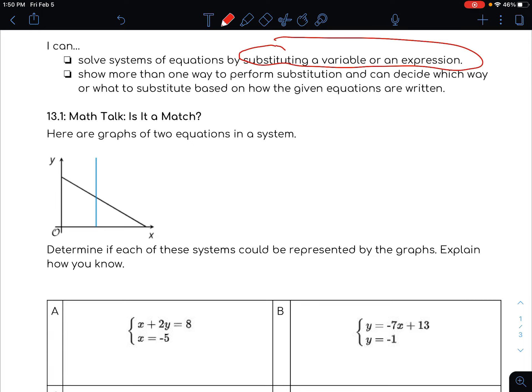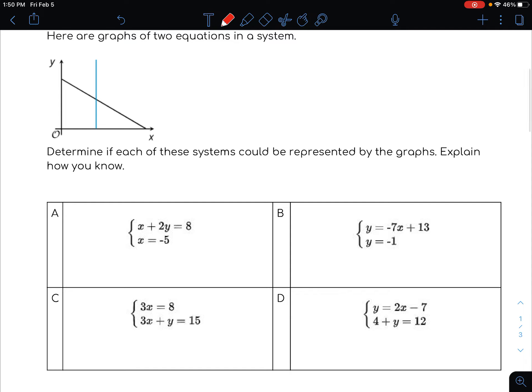So here are graphs of two equations in a system. See the blue line and the black line, and notice that they are crossing each other. The question that we're supposed to answer is determine if each of these systems could be represented by the graphs. Explain how you know. In other words, each one of these situations down here has two equations, and the question is, are those equations shown by the lines that are up here?